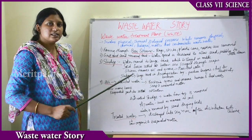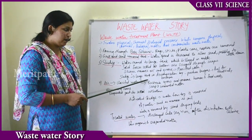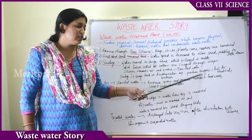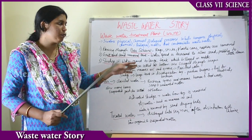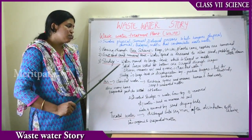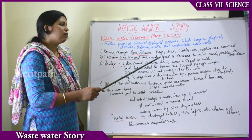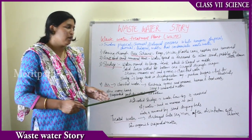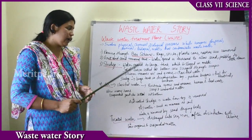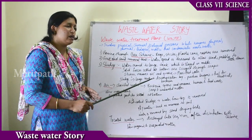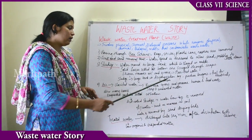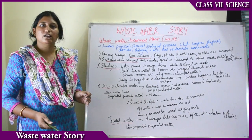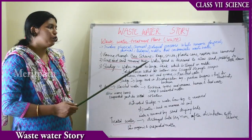The sludge is then transferred to a large tank where it is decomposed with the help of bacteria. This decomposition produces biogas, which can be used as fuel for electricity. The sludge is mostly composed of water, and the solid part after processing is also called sludge.